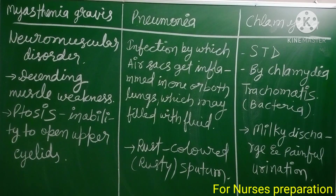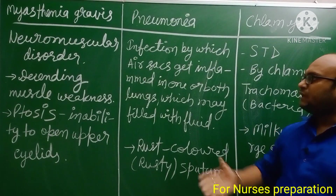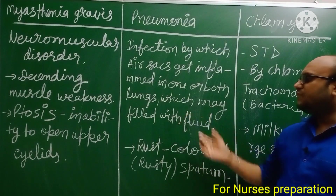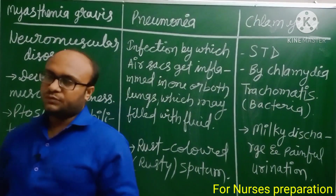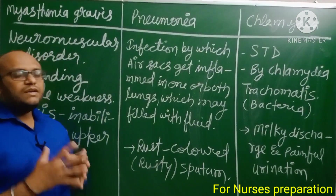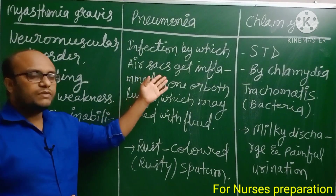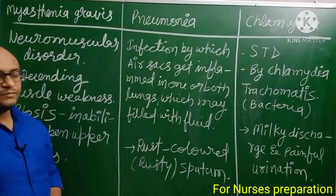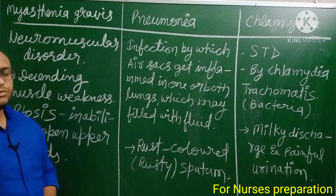The next disease is Pneumonia, a very fatal condition. It is an infection by which the alveoli get inflamed in one or both lungs and may be filled with fluid or pus. Pneumonia can be caused by bacterial, viral, or other infections. Rusty sputum or rust-colored sputum is the important sign and symptom of this disease.